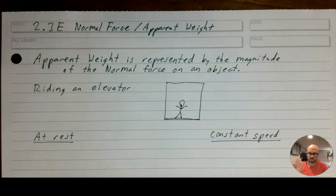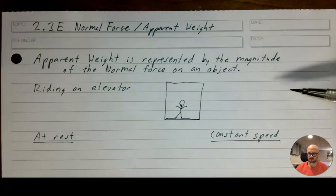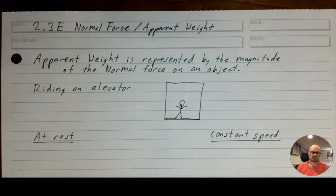Apparent weight is a phrase that we give to how we experience the normal force — you can think of it as how heavy you feel. What's really happening is you are getting either pushed on by the ground more than usual or less than usual, and that's why you feel heavier. Apparent weight is represented by the magnitude of the normal force on an object, and in order to change an object's apparent weight, there needs to be acceleration.